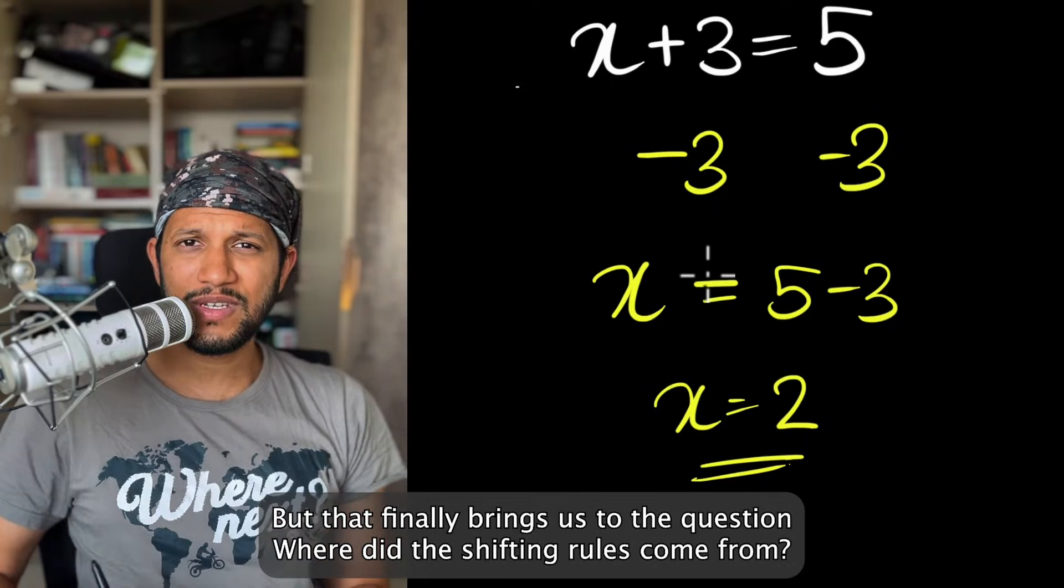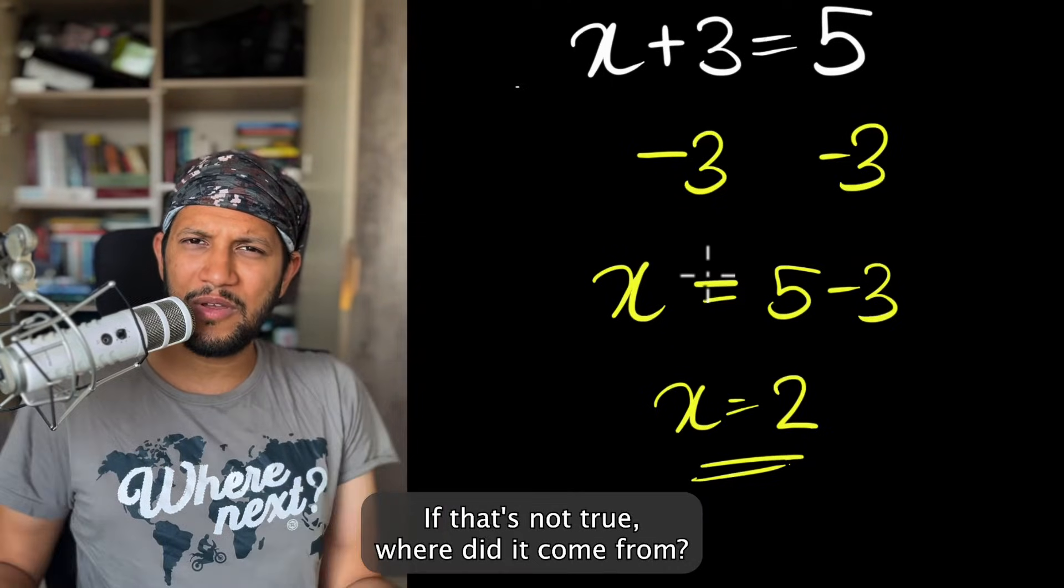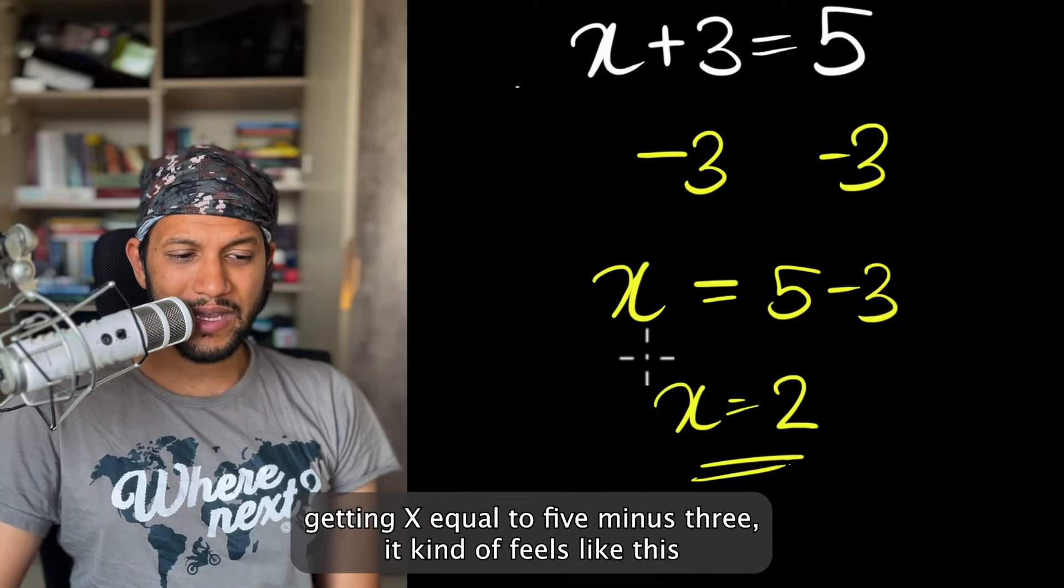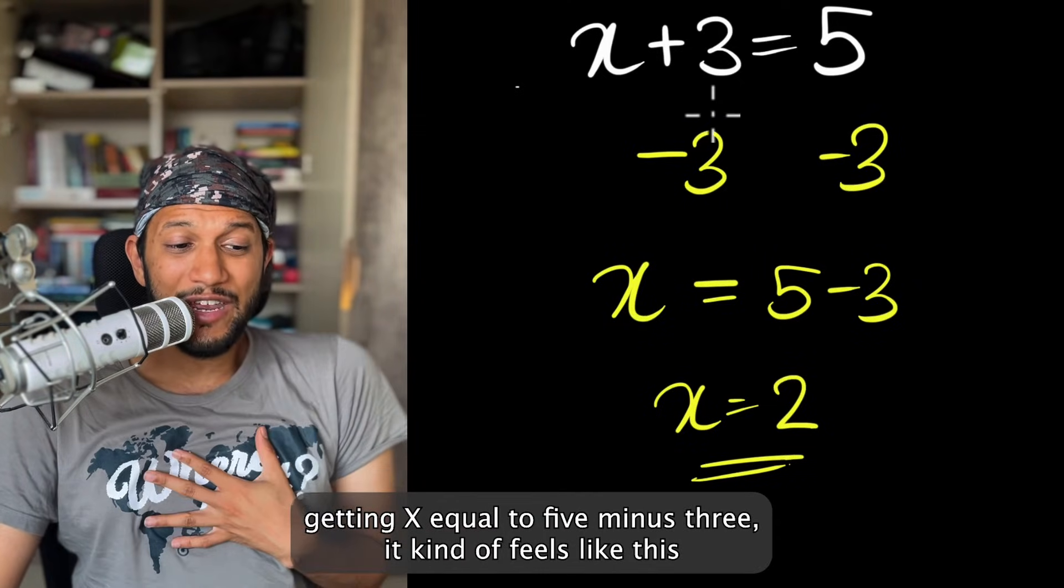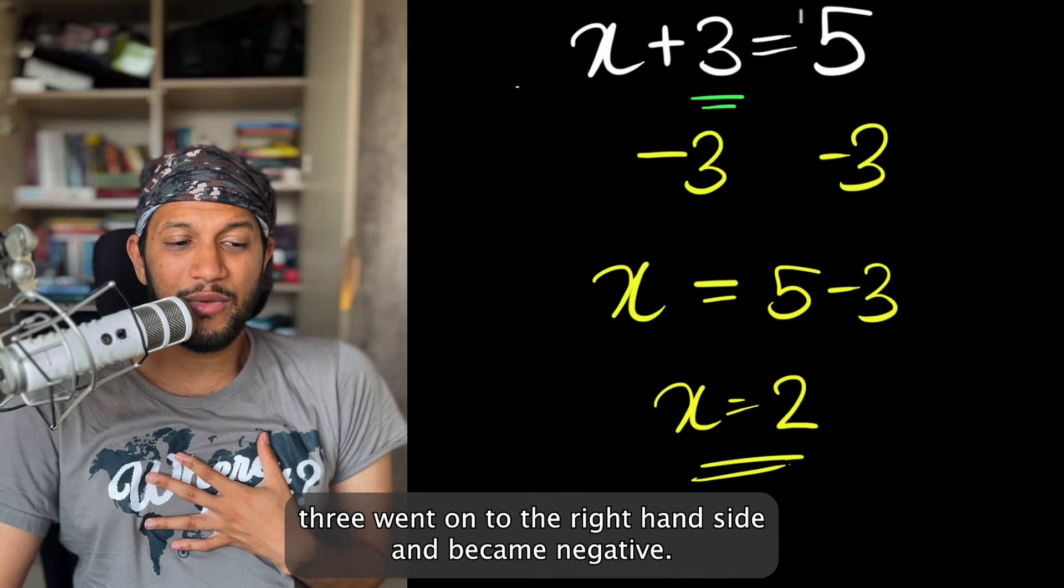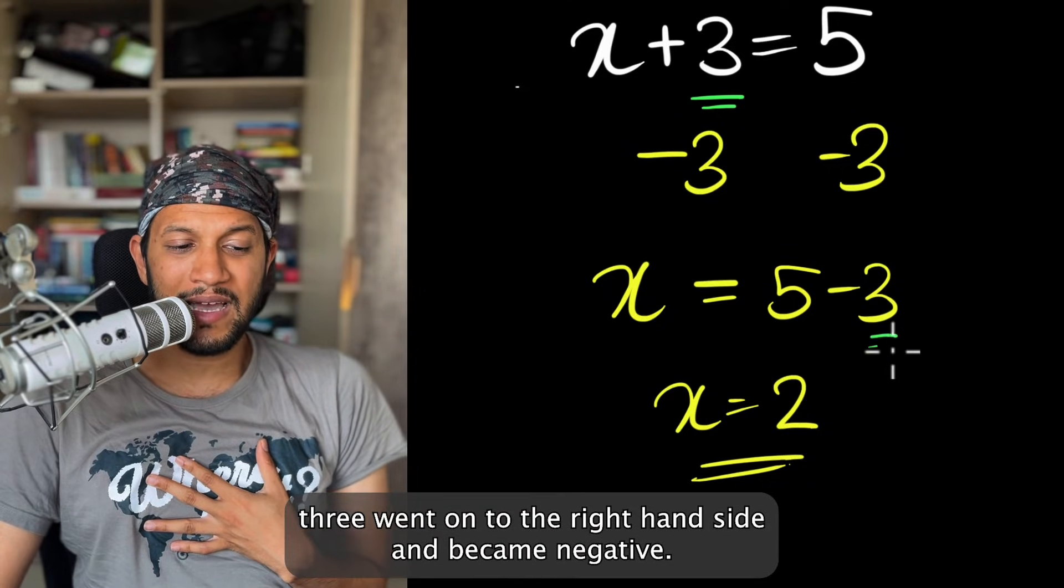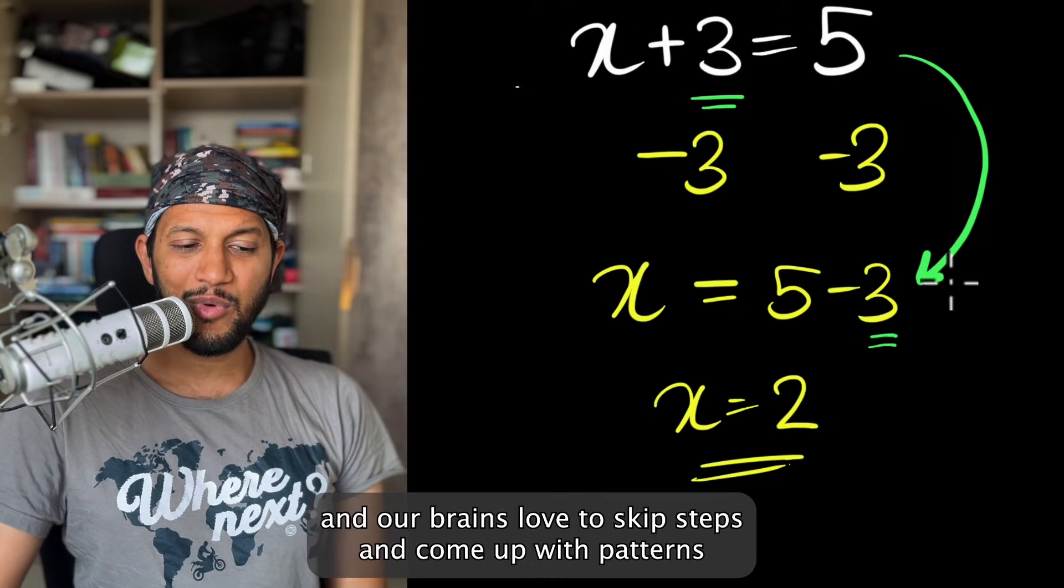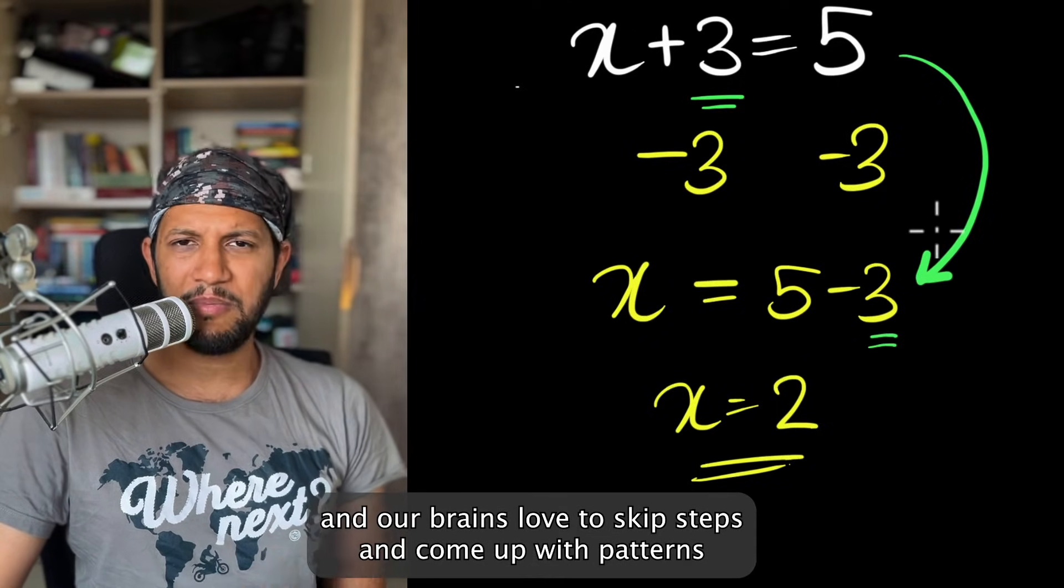But that finally brings us to the question, where did the shifting rules come from? Like if that's not true, where did it come from? Well, you can see when you're subtracting three on both sides and you're getting X equal to five minus three, it kind of feels like this three went on to the right hand side and became negative. It feels like that because you're skipping these steps.